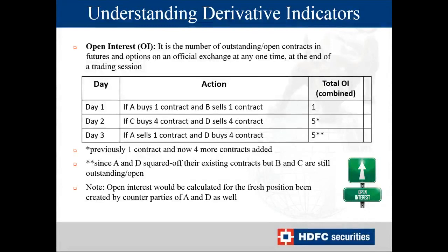On day three, A is selling one contract, meaning A is squaring off their position, and B is also squaring off. So A and B have squared off, removing one contract. But B still has four contracts open, and C also has position open. Because A and B squared off, a counterparty anonymously took the opposite direction of those trades, which also get calculated as open outstanding contracts. So if someone says the open interest of ABC contract was one lakh, it means 50,000 buyers and 50,000 sellers.